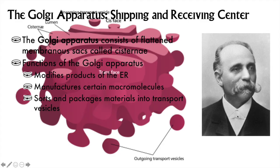The Golgi apparatus are named after a dashing Italian with an awesome mustache. The Golgi apparatus, also called Golgi bodies, are also made up of cisternae that have a lumen inside. However, the Golgi apparatus has a different function: it modifies the products of the ER and prepares them for export out of the cell. This is very important in multicellular organisms that need certain cells to produce certain biomolecules, like hormones, and then export them out to the rest of the body.